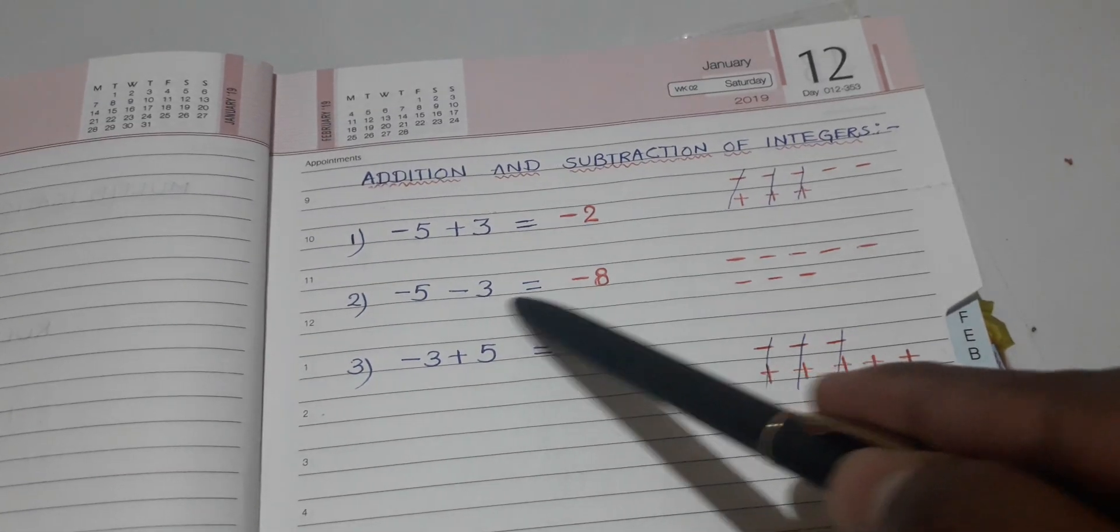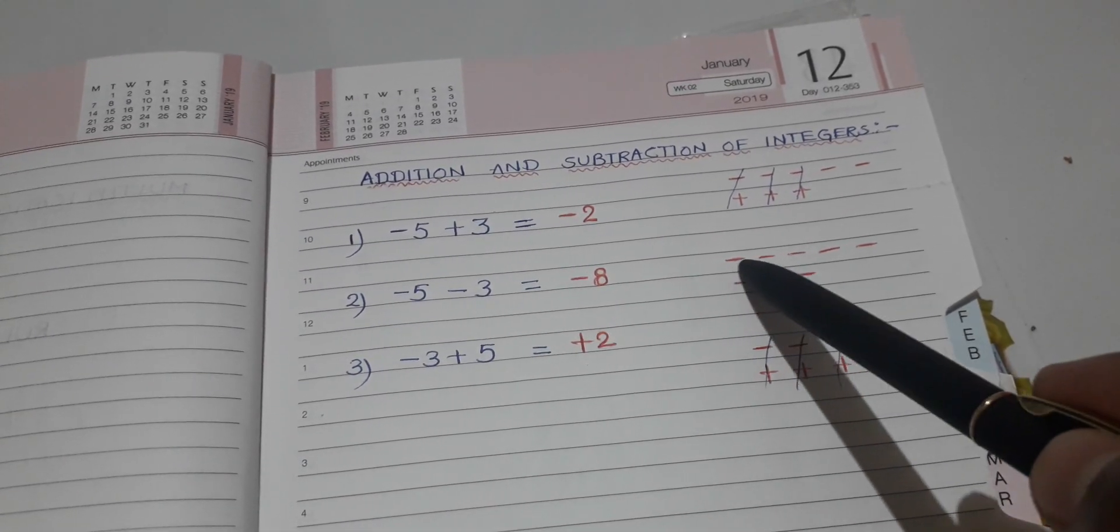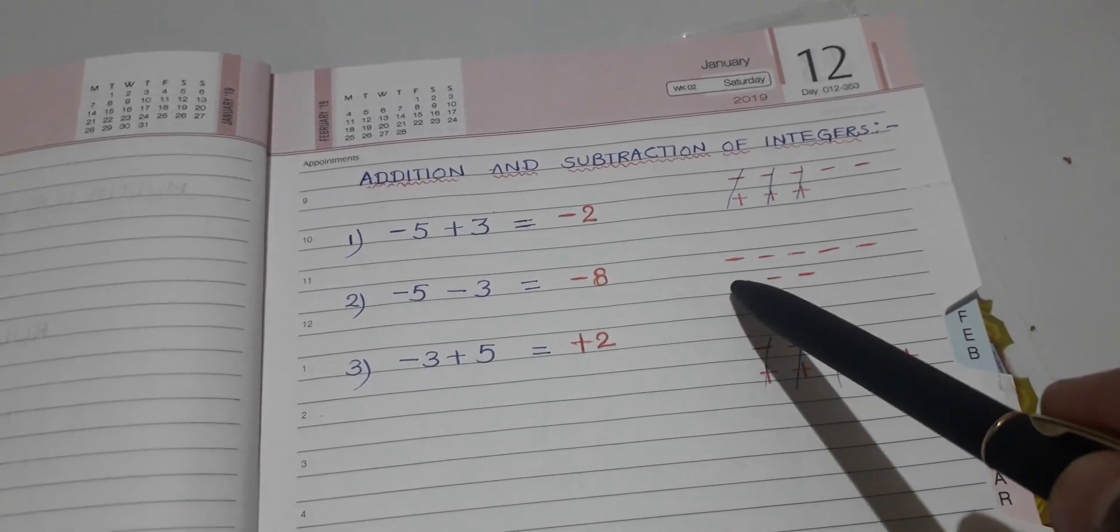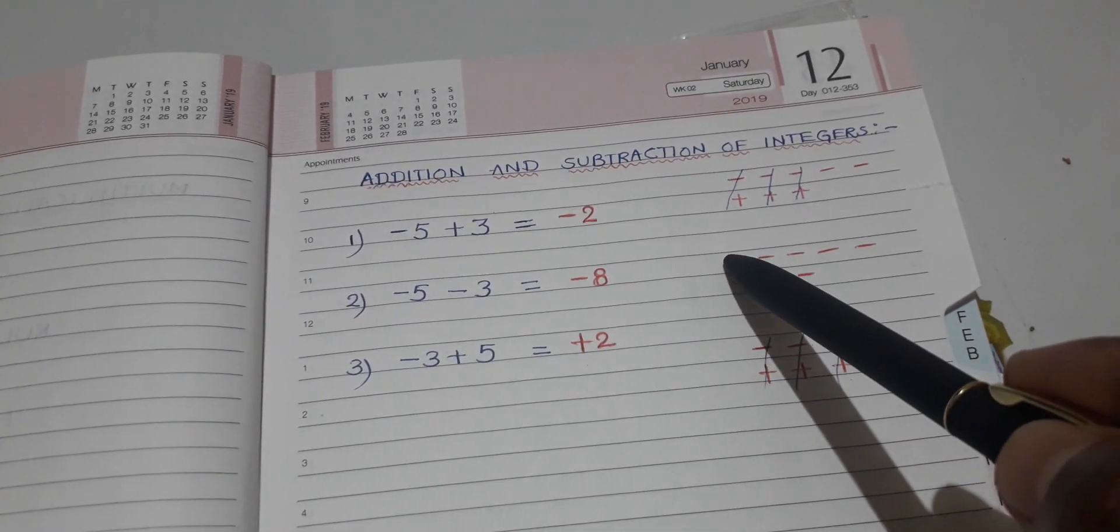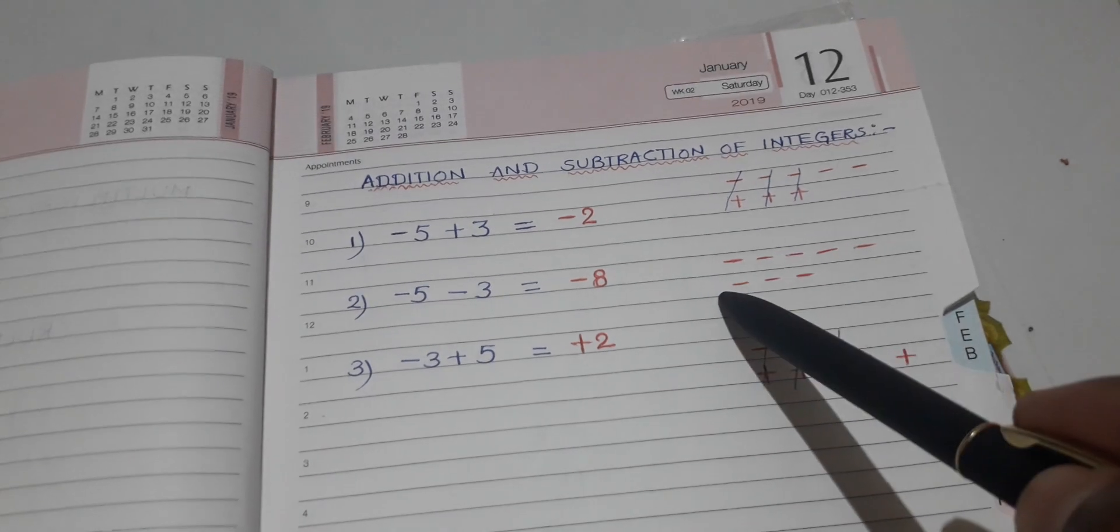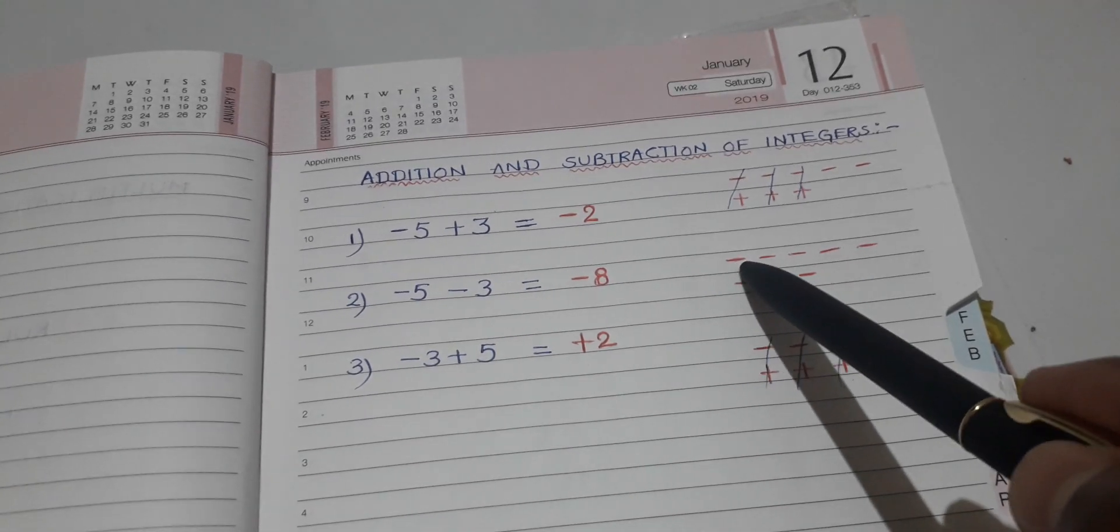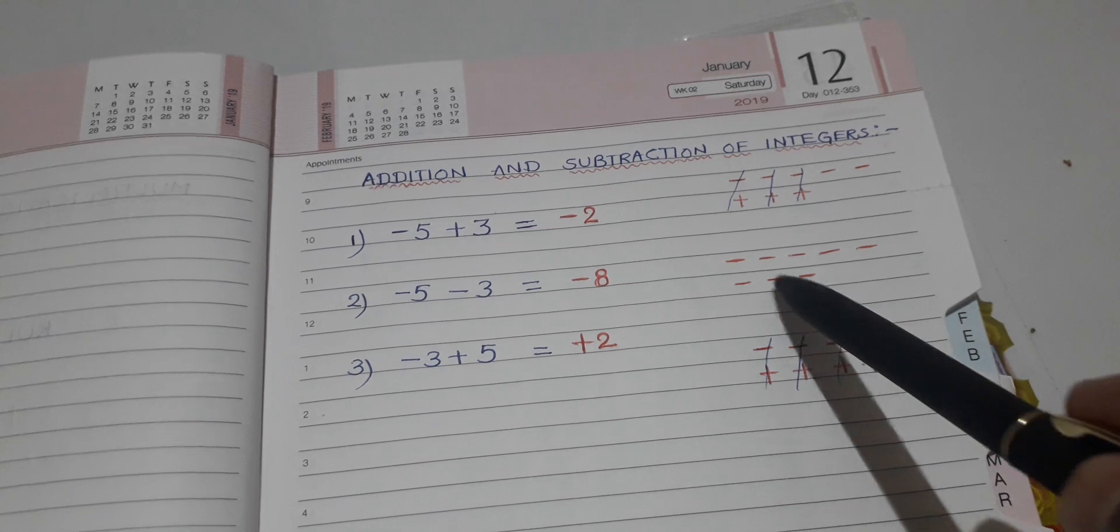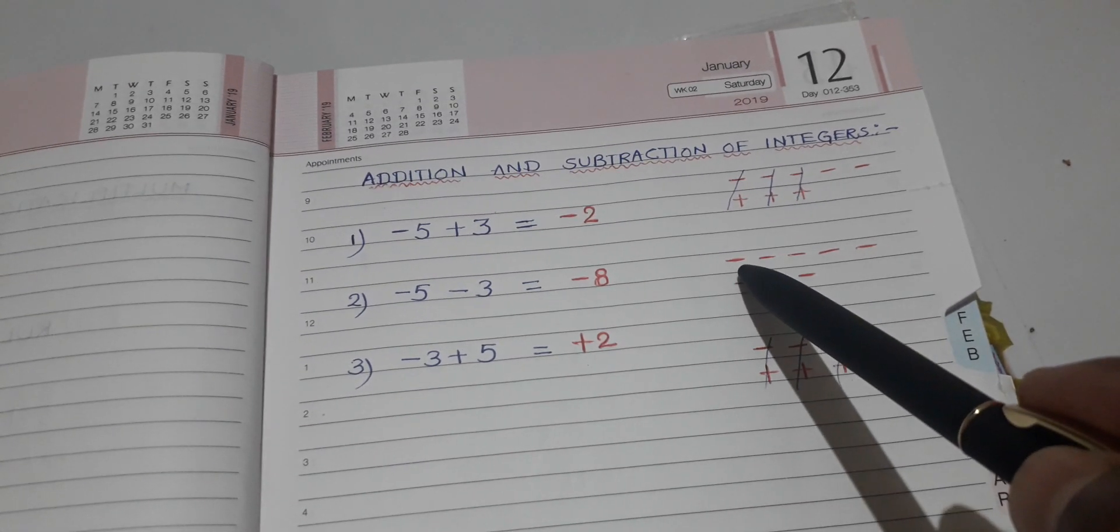For minus 3, you write 3 minus symbols below the previous minus symbols only. There is no plus symbol. Whenever minus and plus is there, we can cancel. But these all are negative symbols only. In that case, what do we have to do? Simply, we have to count all those.